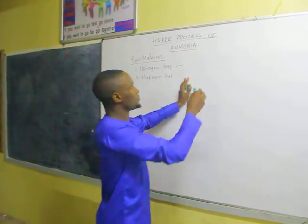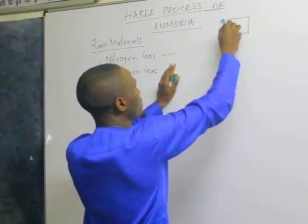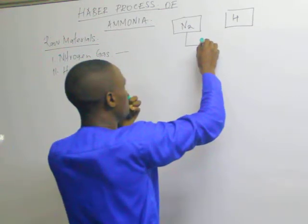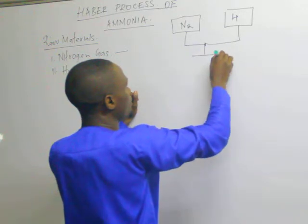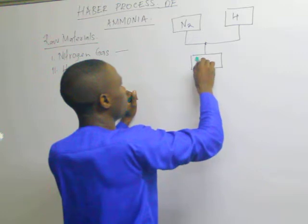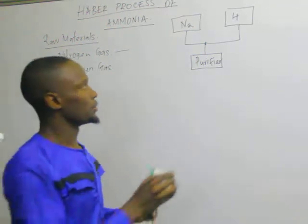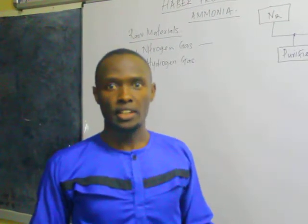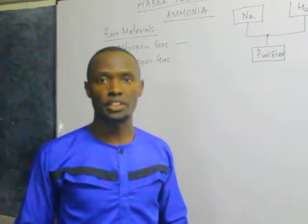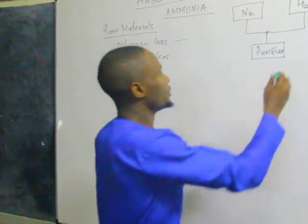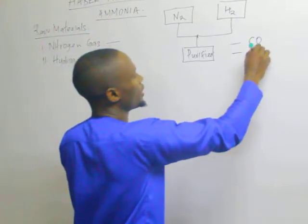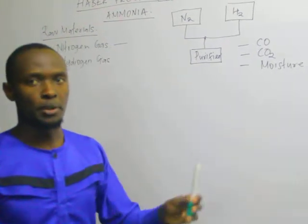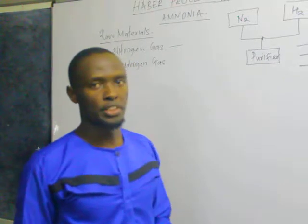Now let me go to the process. The two gases, nitrogen and hydrogen, are fed into a purifier. In the purifier, we remove the impurities that may otherwise poison the catalyst, because a catalyst is used in this process. Impurities removed include carbon monoxide, carbon dioxide, moisture, and sulfur compounds.